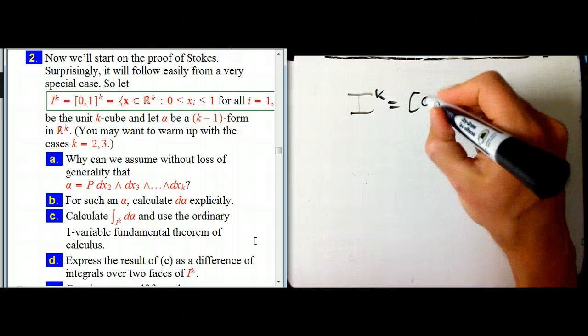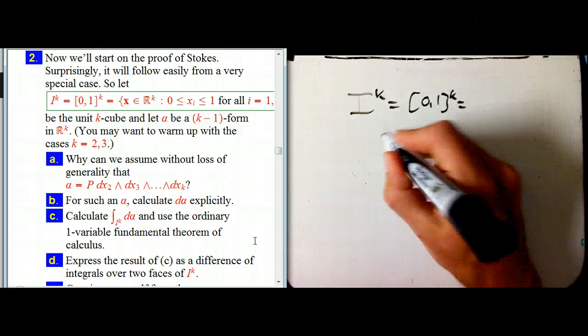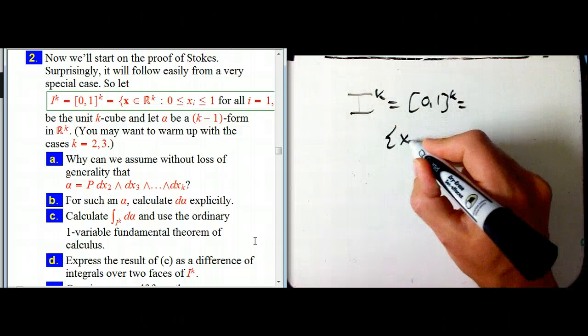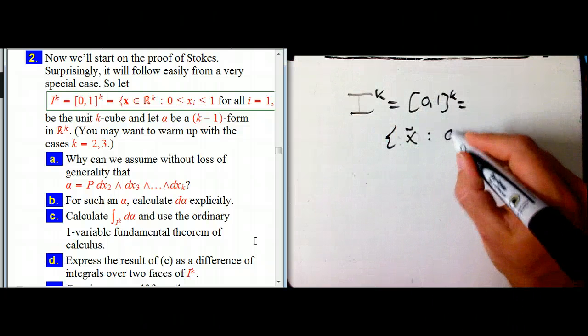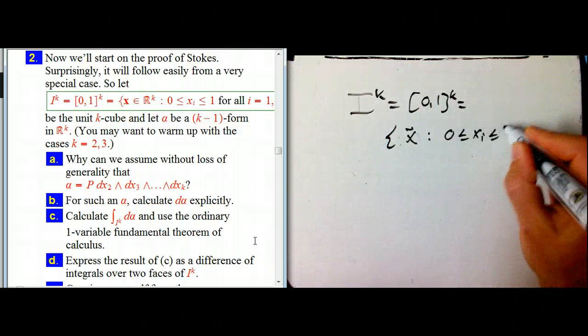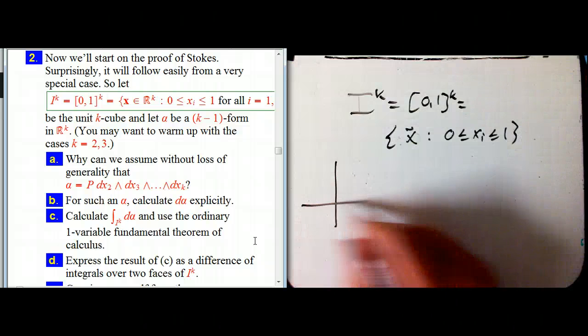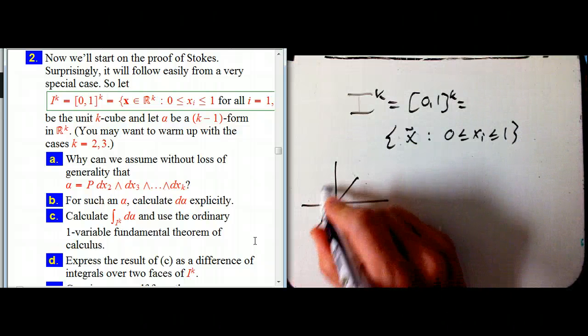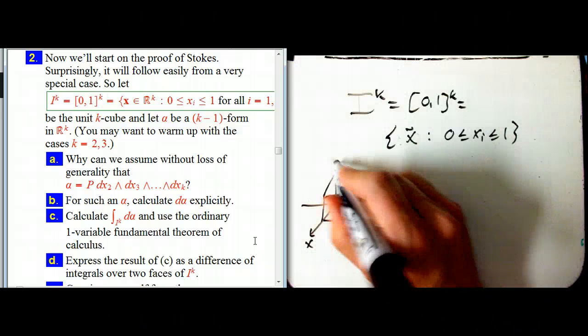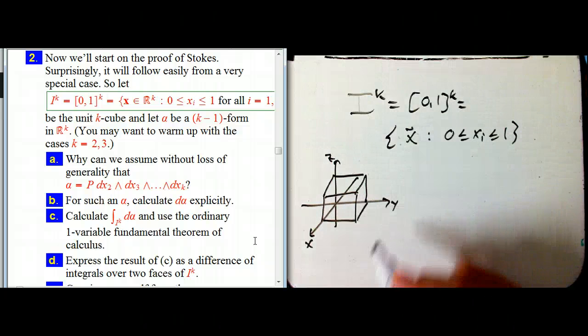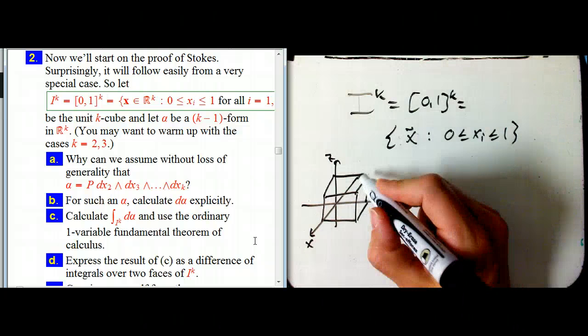I^k is just all, where all the coordinates, it's just the set of x such that all the coordinates are between zero and one. I'm going to draw it as the three cube. Here's x going out, and we're going to be a little careful about orientations here to get the signs right.